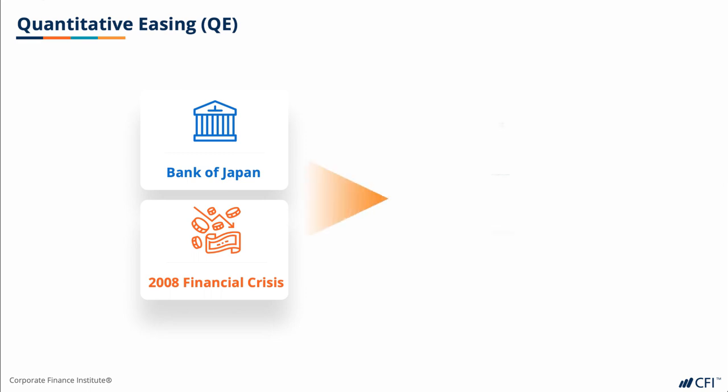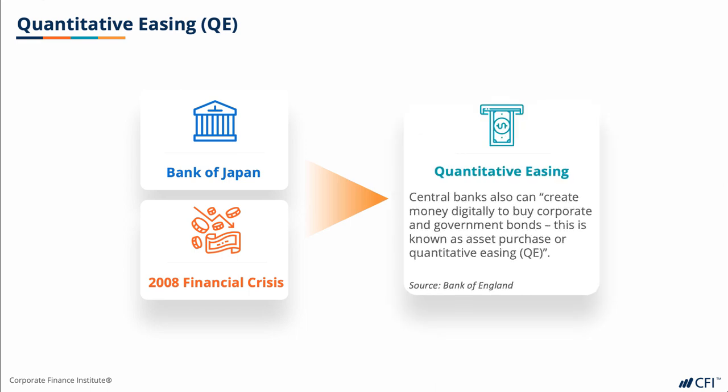So how is QQE done? According to the Bank of England definition, central banks can create money digitally to buy corporate and government bonds. This is known as asset purchase or quantitative easing — QE. In practice, if you refer back to our policy rate slides earlier, you may remember that if the central bank cuts policy rates, one of the channels that it should impact the economy is to stir up borrowing.